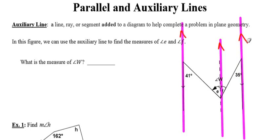There are lots of different ways to draw auxiliary lines, so you might draw yours in a different location than I draw mine, but as long as we end up with the same answer, it's clear that what you did is correct. I don't want anybody thinking there is just one right way to do these. Our mission here is to find the measure of angle W, highlighted in red.